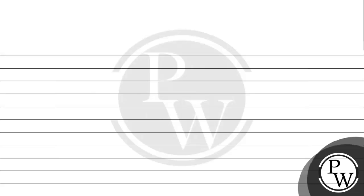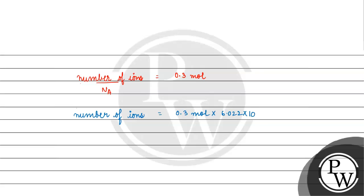The number of moles is equal to the number of ions divided by Avogadro's number. So the number of ions equals the number of moles multiplied by Avogadro's number, which is 0.3 into 6.022 into 10 raised to the power 23, giving 1.8 into 10 raised to the power 23.